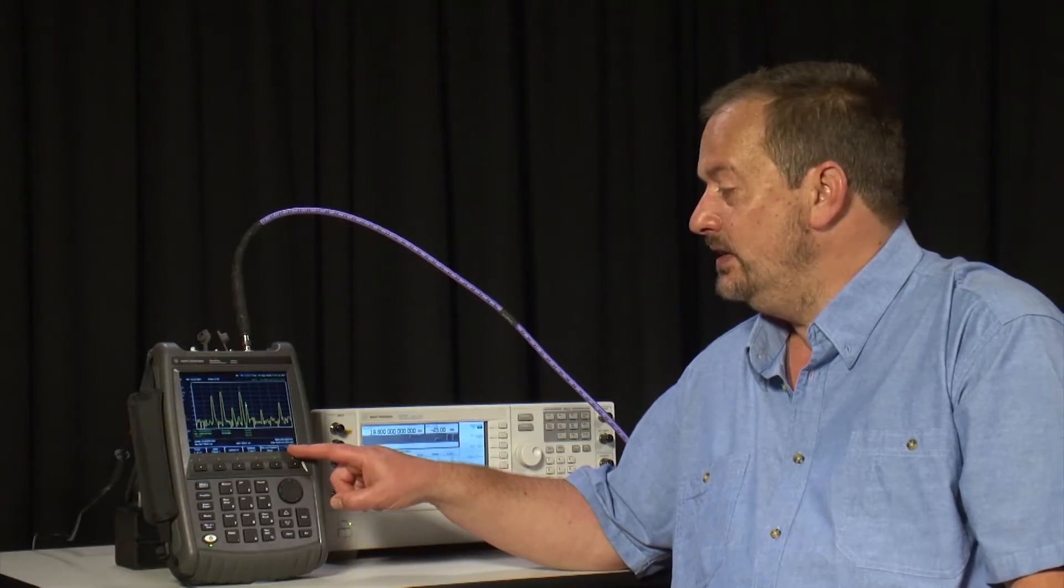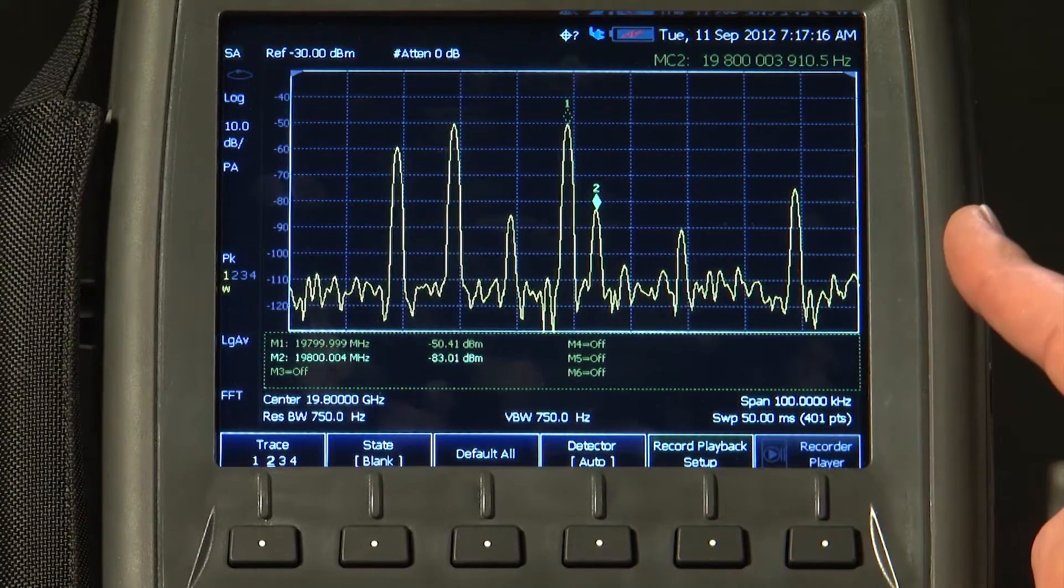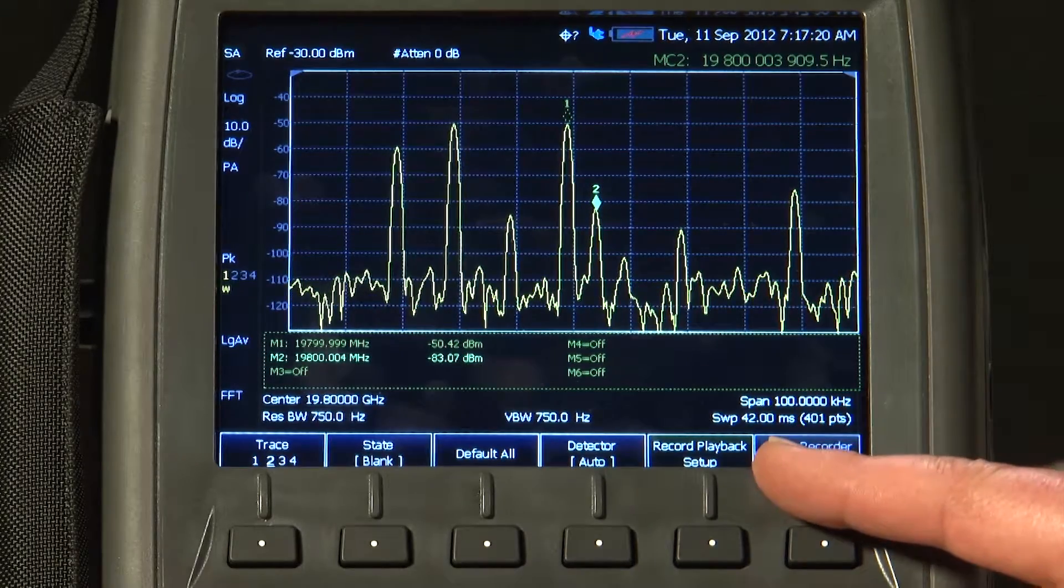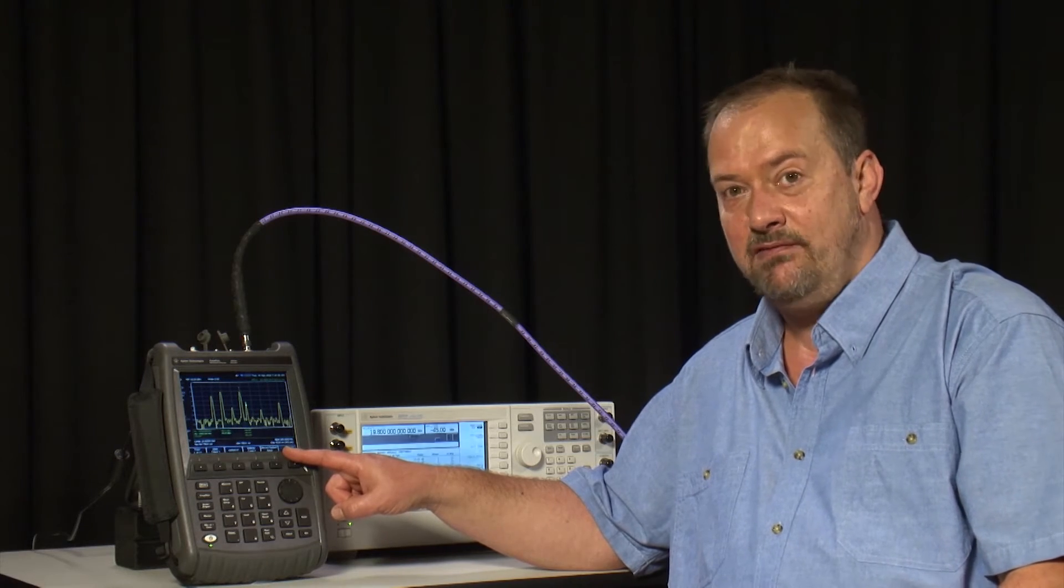You will also see a button here for Record and Playback Setup. That is where we can record the spectrum analyzer trace into the internal memory and log it over a period of time. But for more details on this feature, please watch the short interference video where we cover it in more detail.